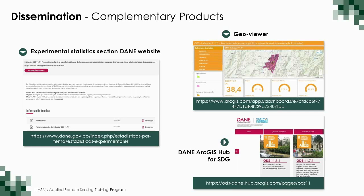This information is very useful to understand how cities and countries are organized, what accessibility population groups of interest have, and what proportion of public space exists within the built-up area of cities. I invite you to visit the different links, read the experience and methodology we used, and in your own country, if you don't have information on this indicator, I invite you to calculate it. If you have the information, it's very easy to calculate. Thank you very much.